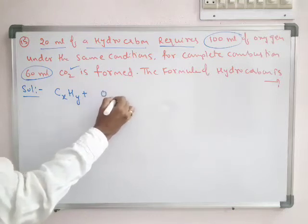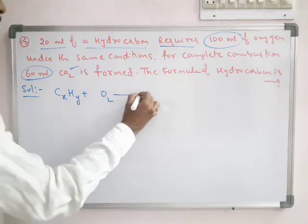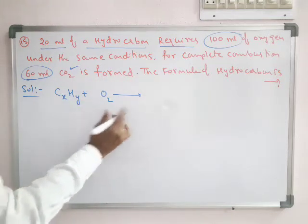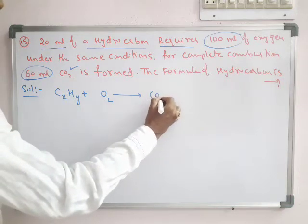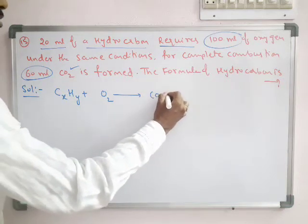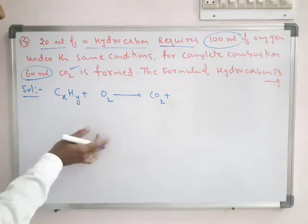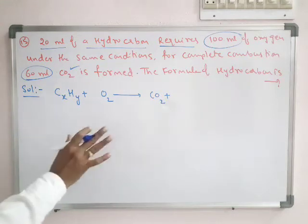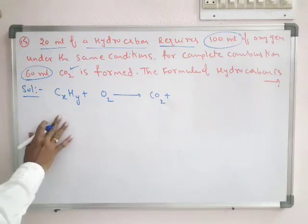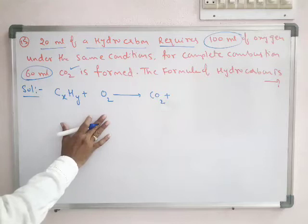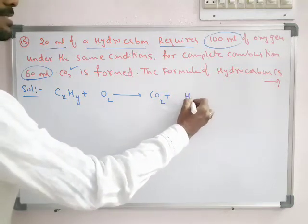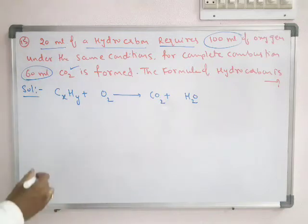CₓHᵧ is reacting with oxygen. Any hydrocarbon — whether alkene, alkane, benzene — whatever the hydrocarbon, when it reacts completely with oxygen, it forms carbon dioxide and H₂O. These are the common products.